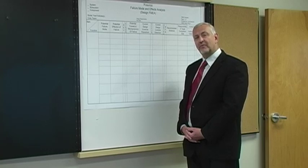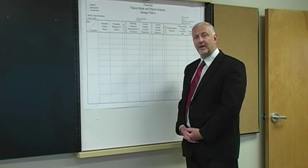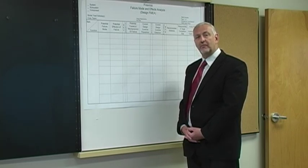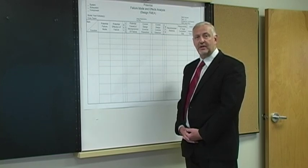In a process FMEA, the process controls column is how I will catch or prevent a defect from being produced or from getting out of the shop, basically protecting the customer in the future.